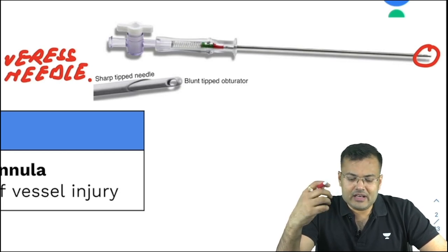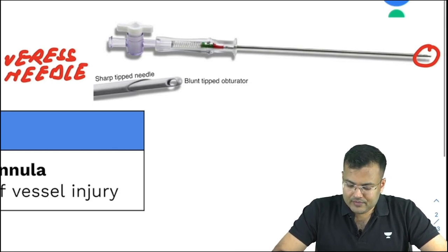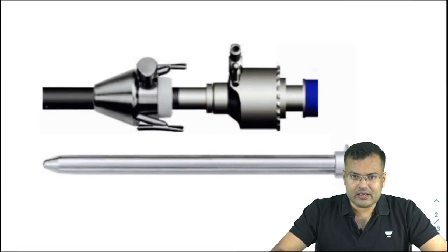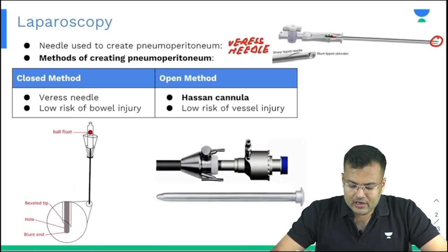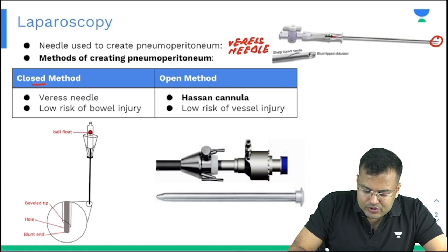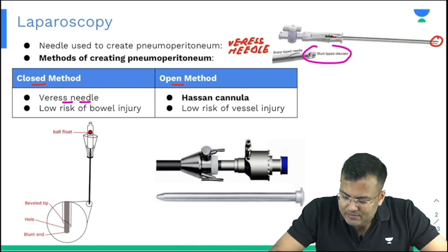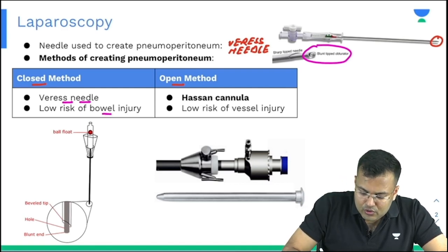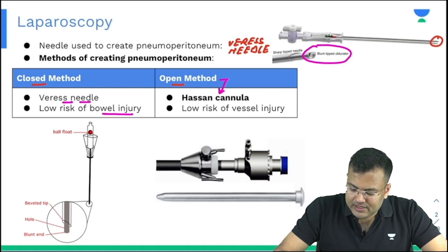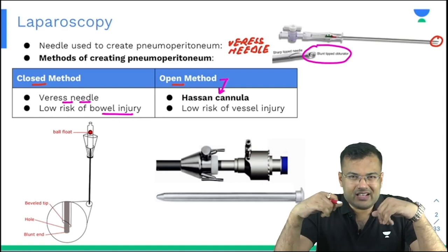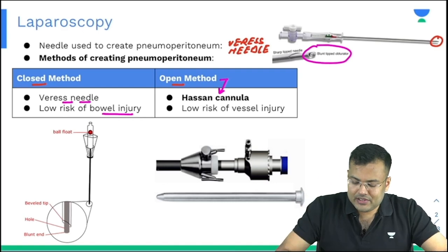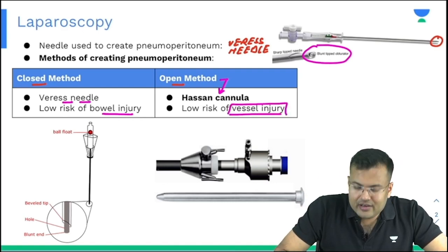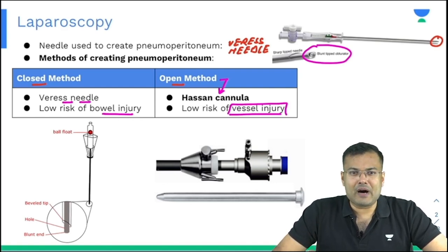Whenever we use the Veress needle for creating pneumoperitoneum, this is known as the closed method. If we are using the Hassan cannula, that is known as the open method. There are two methods of creating pneumoperitoneum. In the closed method we use the Veress needle, which has a safety valve at the tip associated with low risk of bowel injury. In the open method we use the Hassan cannula, and since it is performed under direct vision, it is associated with low risk of vessel injury.